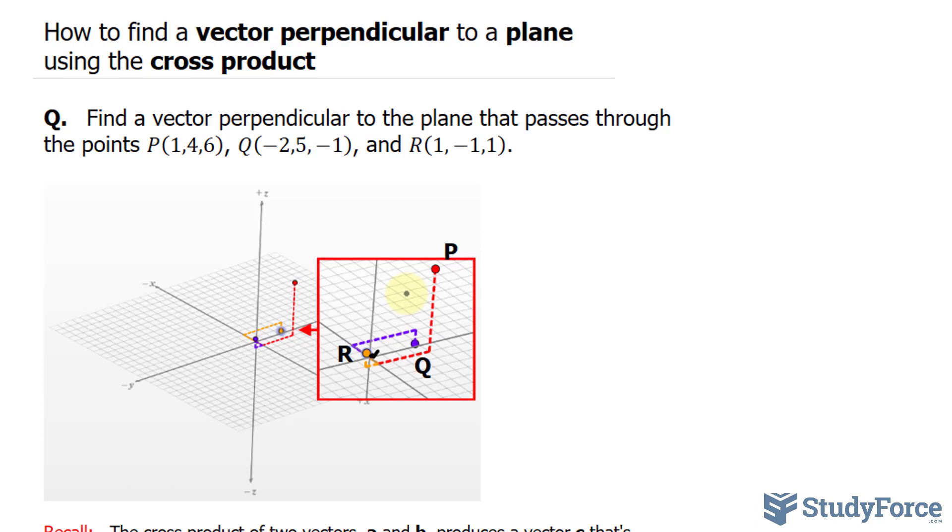I want you to imagine that there is a plane, a 3D plane, that is passing through each of these points. And what we're looking for is a vector that is perpendicular to that 3D plane.